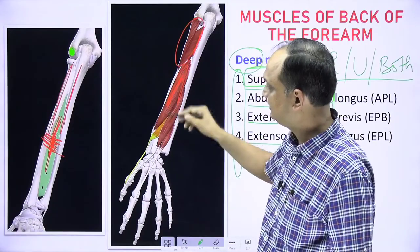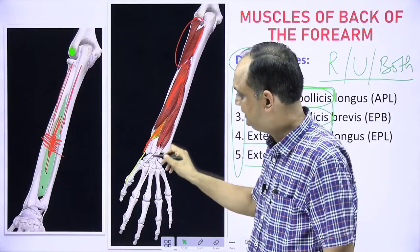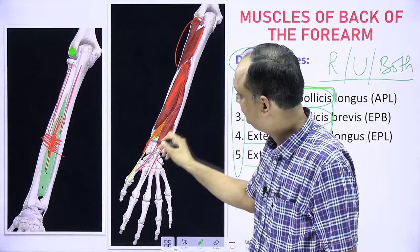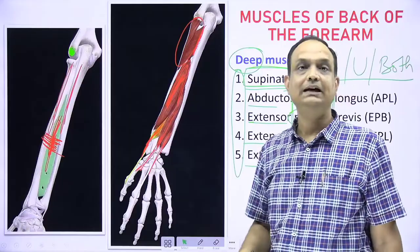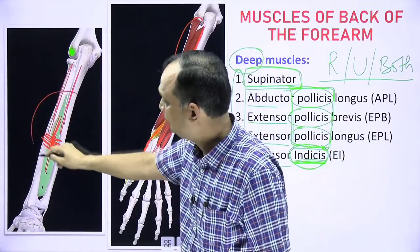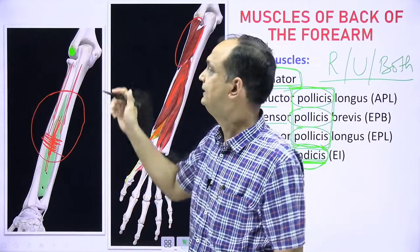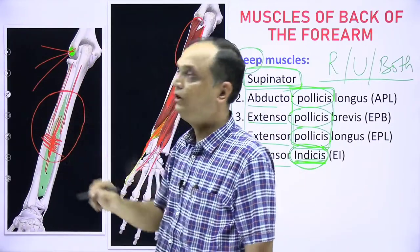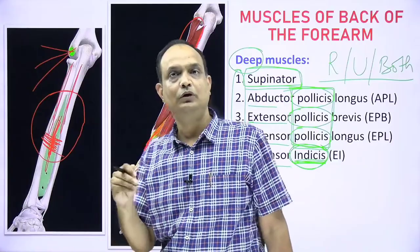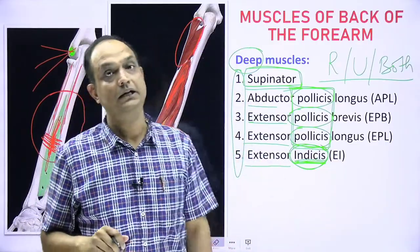In the deep group: the supinator arises from the ulna; abductor pollicis longus, extensor pollicis brevis, extensor pollicis longus, and extensor indicis arise from the posterior surface of the forearm bones. The key rule is: muscles not arising from the forearm bones — not coming from radius or ulna — belong to the superficial group, not the deep group.